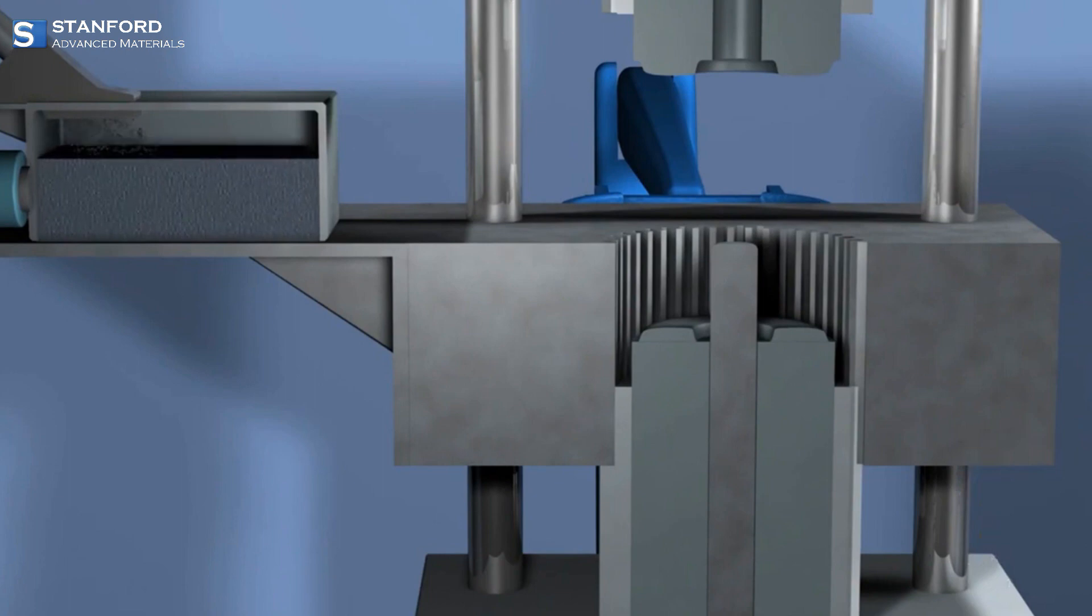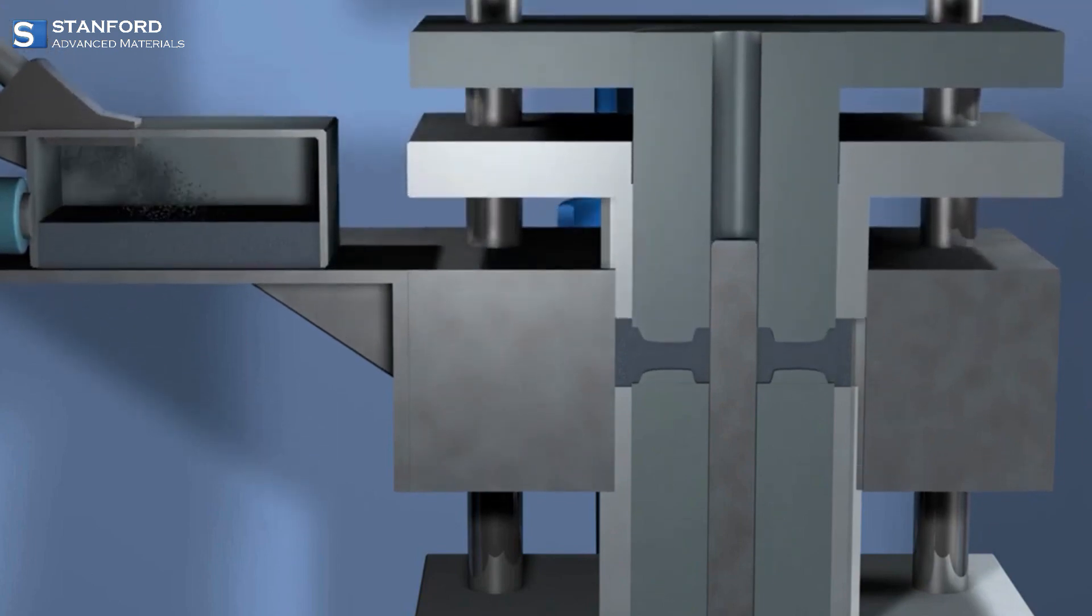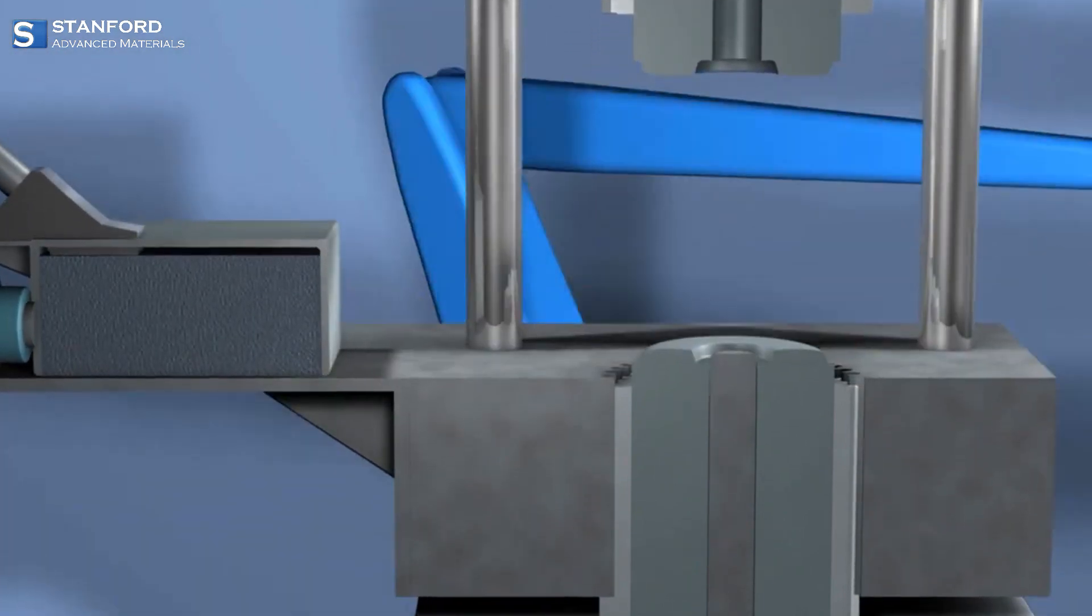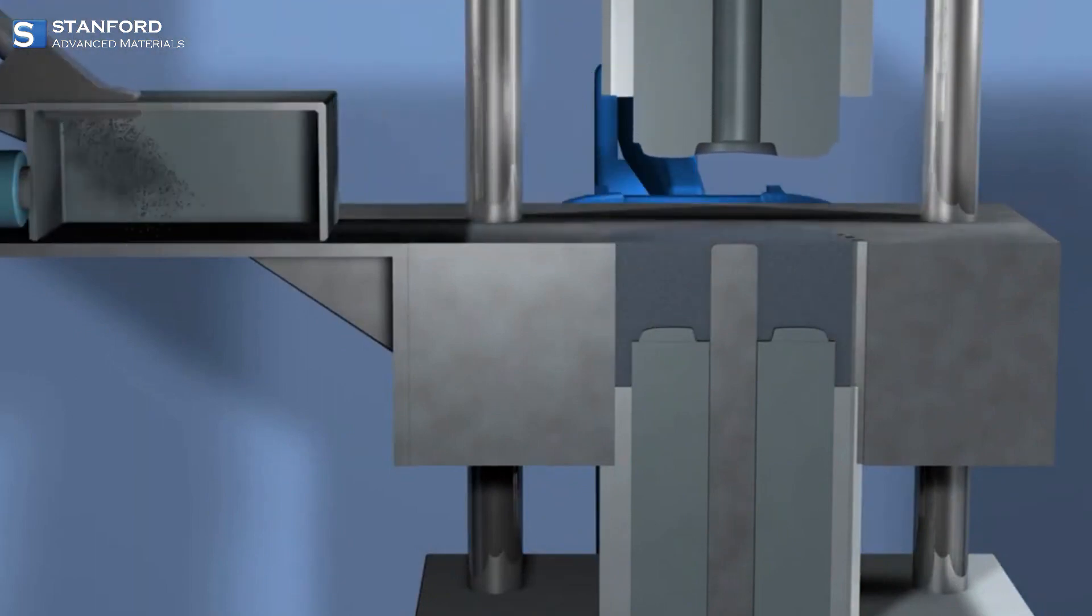In terms of manufacturing, the production of LAB6 involves intricate processes, typically synthesized through powder metallurgy. The carefully controlled fabrication ensures the material retains its desired properties.